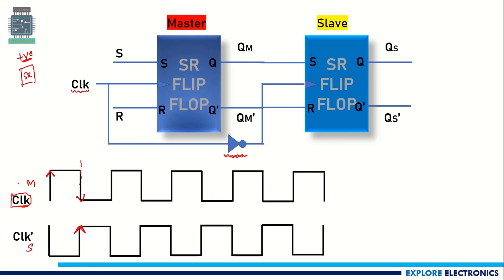If we write the waveform with respect to this clock, the master output will appear at the positive edge of the clock, and in the negative edge of the clock the slave is going to operate — so slave is on here. Similarly, at the next positive edge master will be on, and at the negative edge slave will be on, and so on.